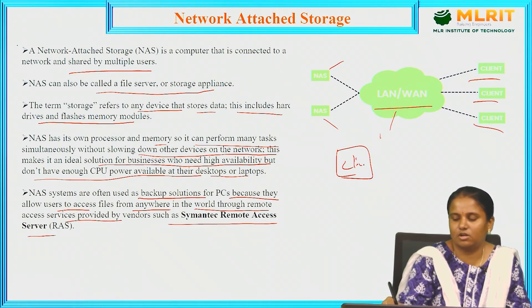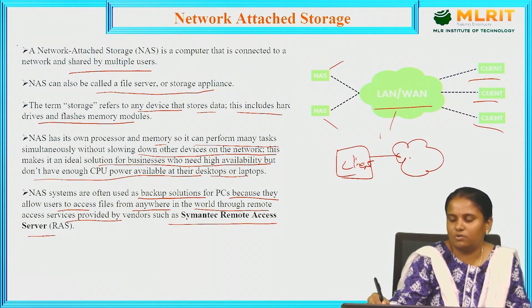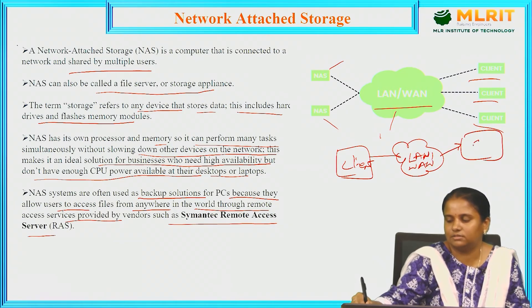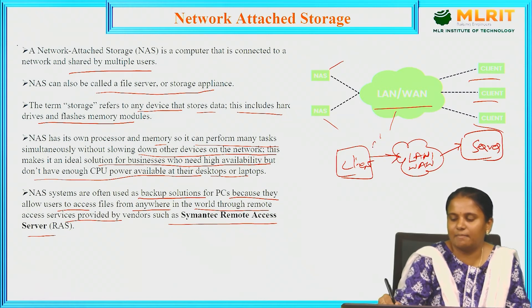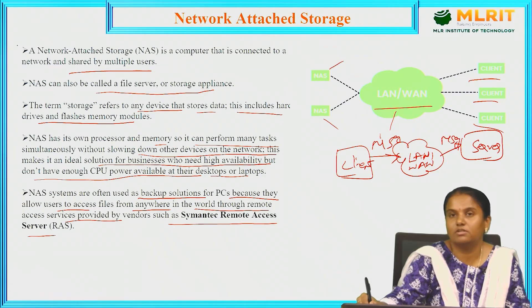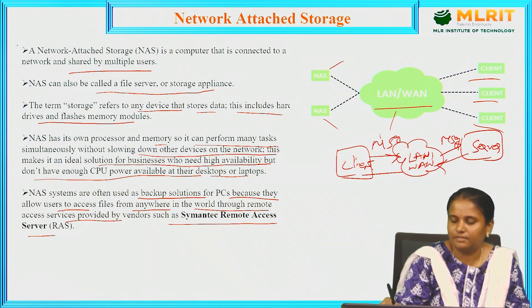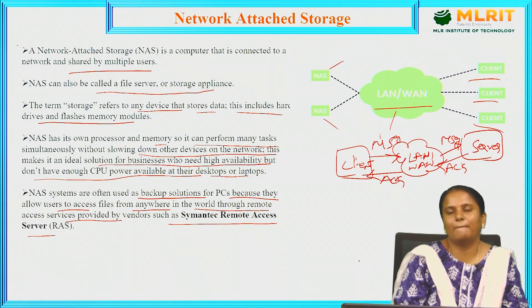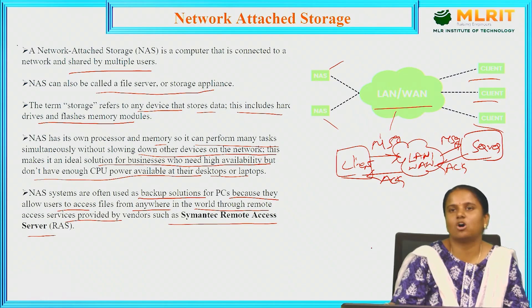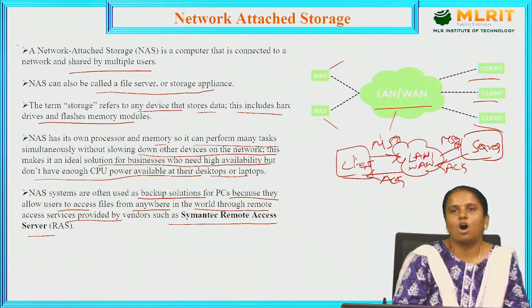In the network attached storage model, a client sends a request through a LAN or WAN to a server. The server sends back an acknowledgement. Without the network connection — whether LAN (local area network) or WAN (wide area network) — it is not possible to send or receive messages between client and server. This is how network attached storage functions in the operating system.